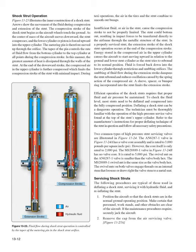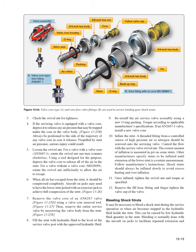Servicing shock struts — typical procedures: 1) Position the aircraft so shock struts are in normal ground operating position. Ensure personnel, work stands, and obstacles are clear. If required, securely jack the aircraft. 2) Remove the cap from the air servicing valve. 3) Check the swivel nut for tightness. 4) If the servicing valve is equipped with a valve core, depress it to release any trapped air pressure — always be positioned to the side in case the core releases, as serious injury could result. 5) Loosen the swivel nut: for AN6287-1, rotate one turn counterclockwise and depress the valve core to release all air; for MS28889, rotate the swivel nut sufficiently to allow air to escape.